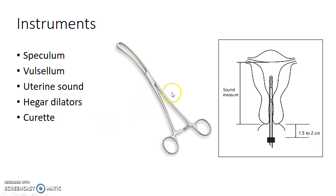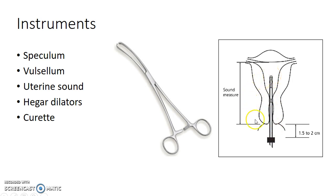This picture shows a vulsellum. This picture shows a uterine sound. A uterine sound is a malleable instrument used for probing and dilating the uterus. It is also used for measuring the length of the cervical canal — this process is called sounding the uterus.